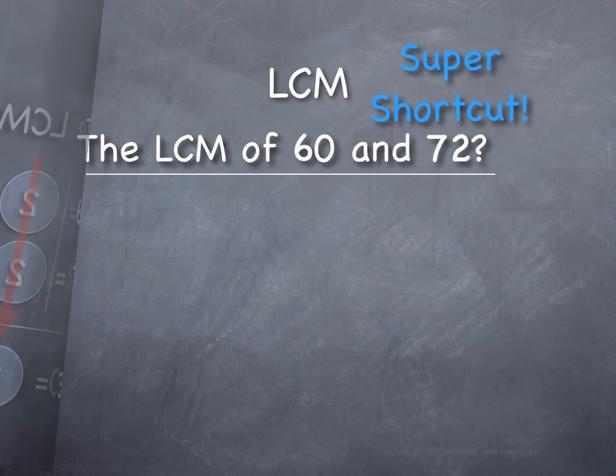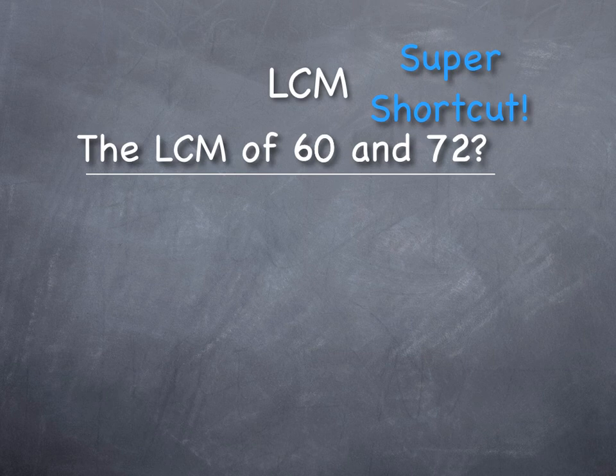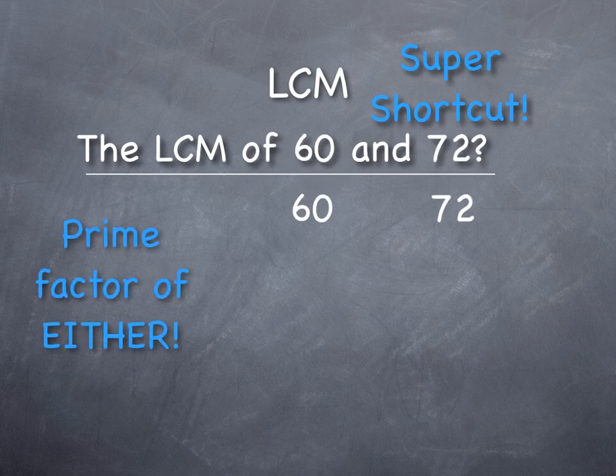Now can we do that in a slightly shorter way? There is a way that's similar to our super shortcut for highest common factor, and that's to ask ourselves: do they have some common prime factors?